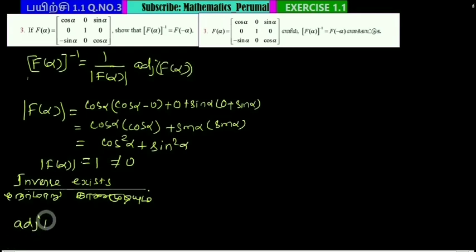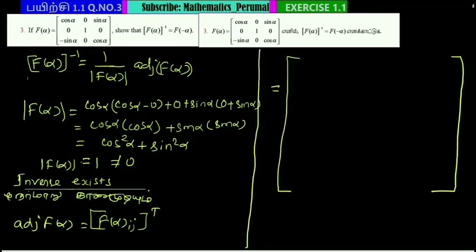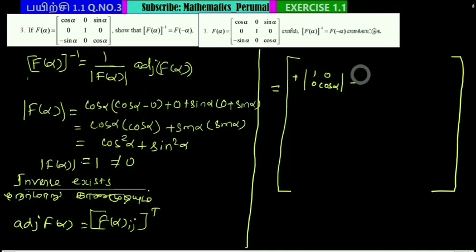So the adjoint of f of alpha is equal to the matrix of co-factors. Now for f of alpha, the i-j co-factors: the first element gives co-factor with cos alpha and 1, then zero co-factors, then the next co-factors. Let's see how we can get the zeros.